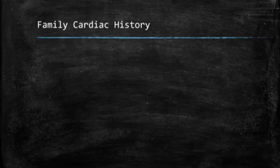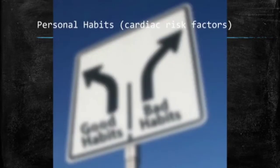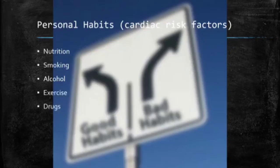Family cardiac history includes asking about hypertension, obesity, diabetes, coronary artery disease, and sudden death at a younger age. Personal habits to assess include nutrition history and usual diet, usual weight and any recent weight change, smoking history including number of cigarettes per day and years of smoking, and alcohol intake including type, volume, and duration — noting that chronic alcohol intake may cause alcoholic cardiomyopathy. Also assess exercise habits and drug intake, especially use of antihypertensives, diuretics, blood thinners, or street drugs.